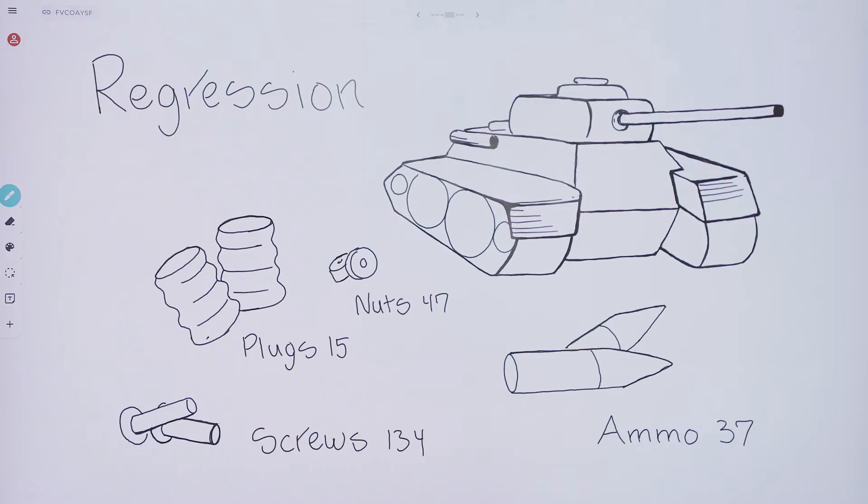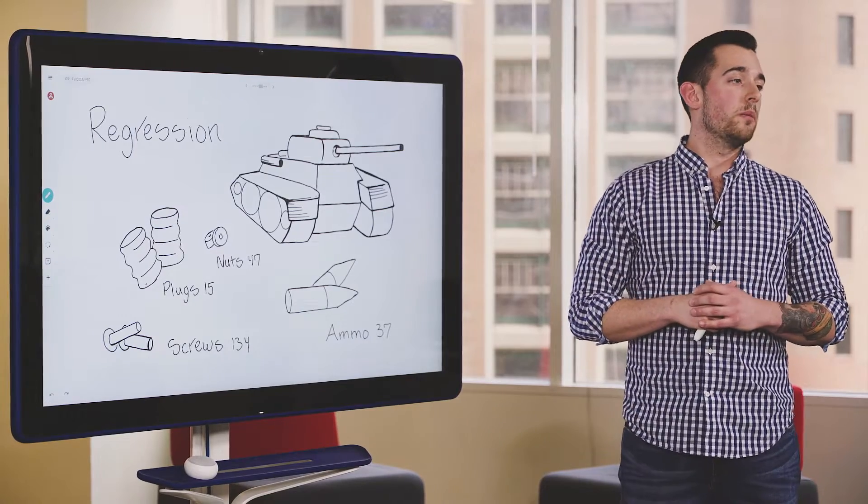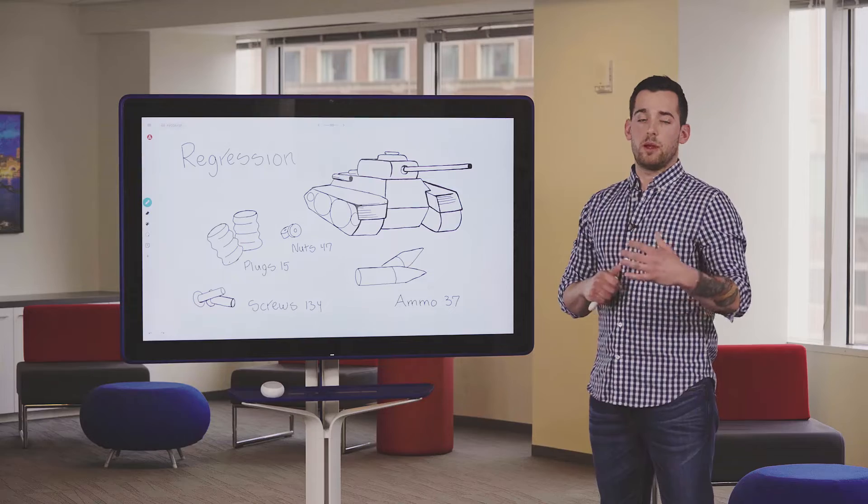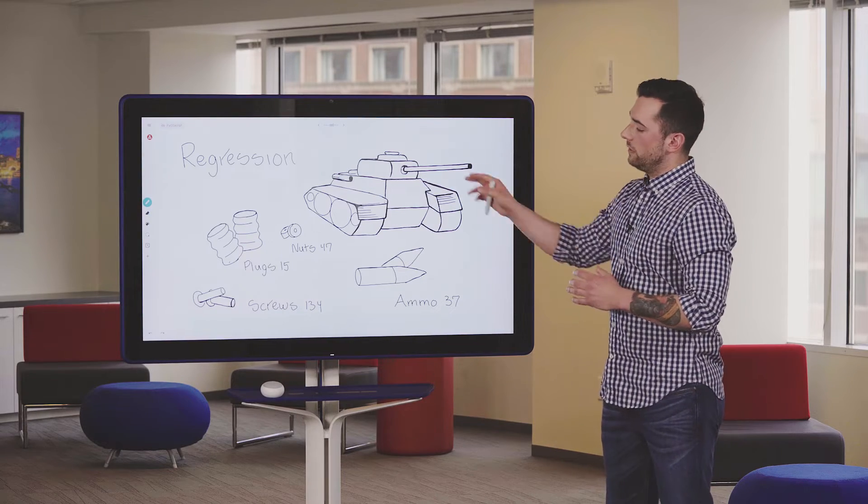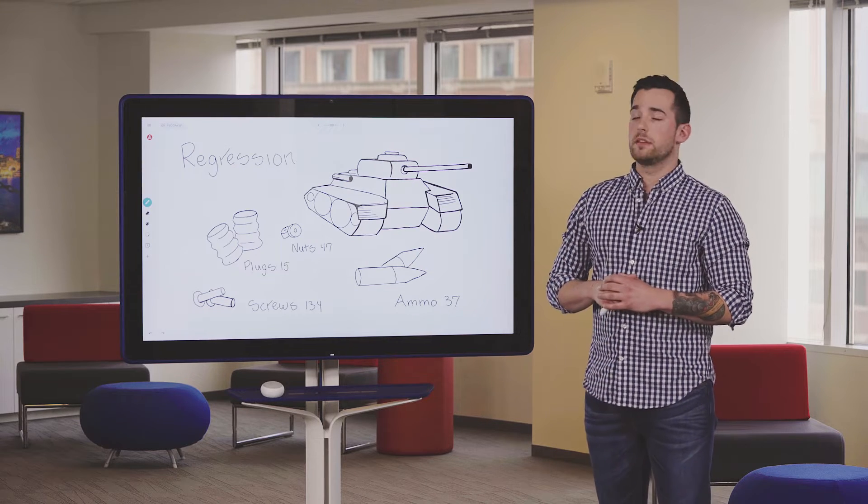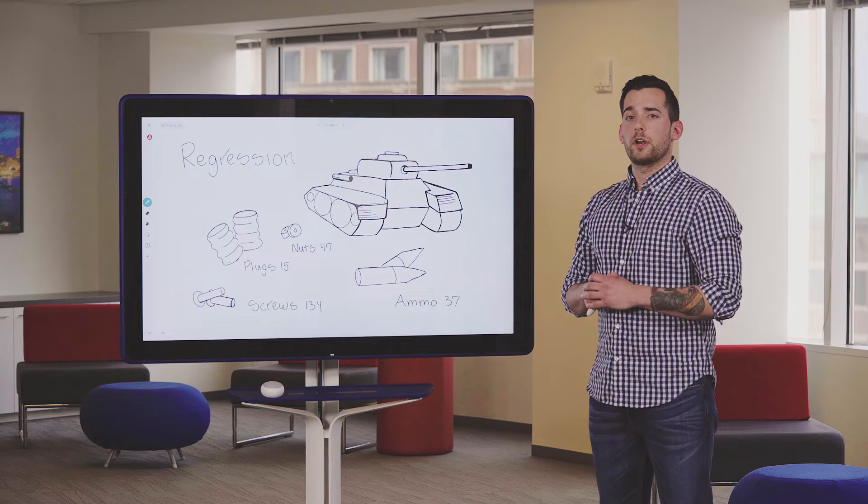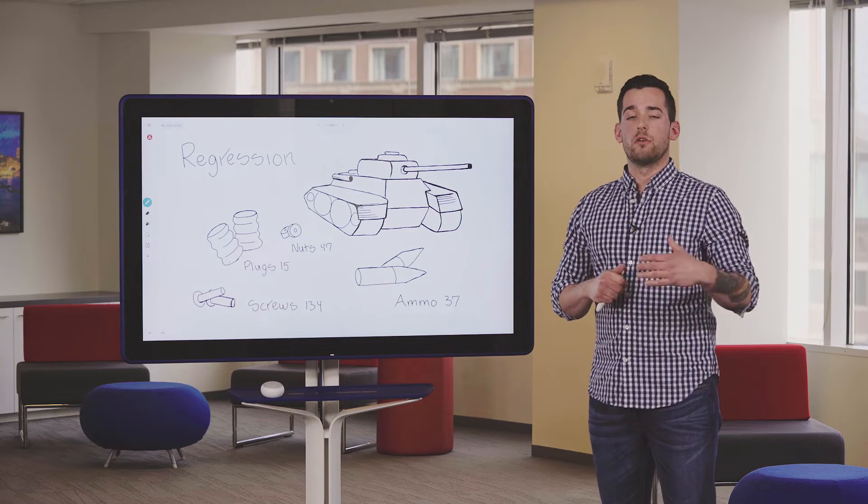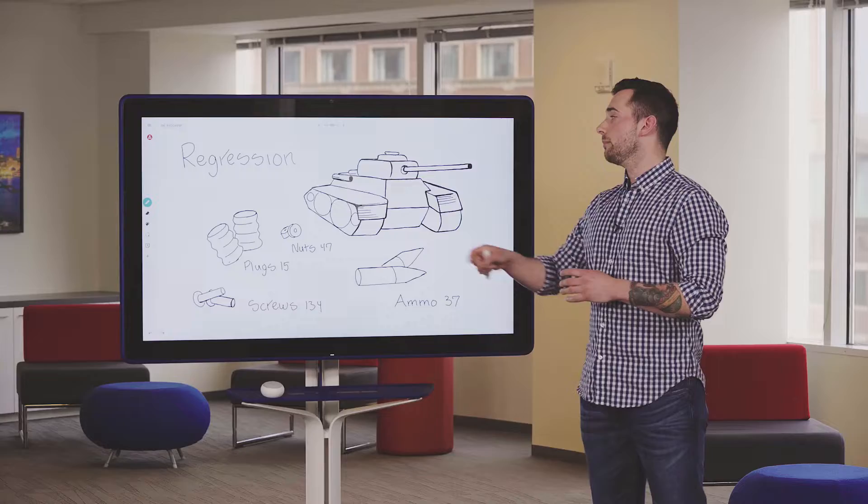Let's look at two examples of this. One is a regression problem. So this regression problem, we're trying to determine how many parts this tank will need to be properly maintained for the next year. We have all of the data about the different screws, the different spark plugs and nuts that we need to maintain this particular tank. We're going to try to predict how many of these we're going to need over the course of the next 12 months. This is a regression problem.